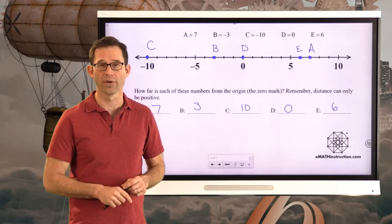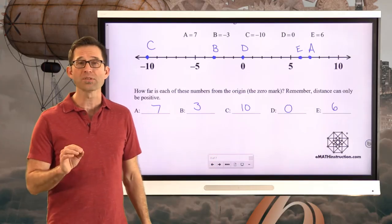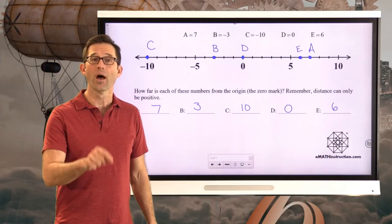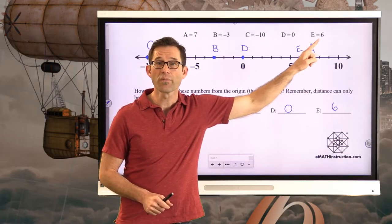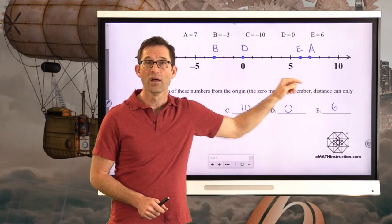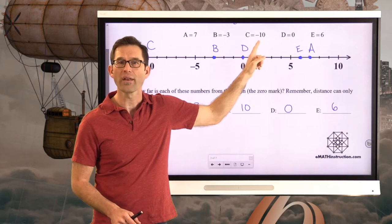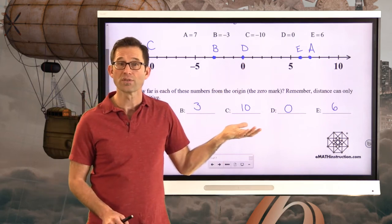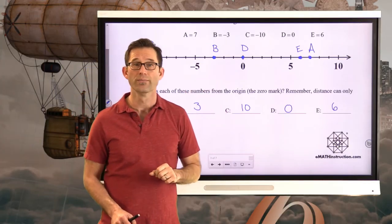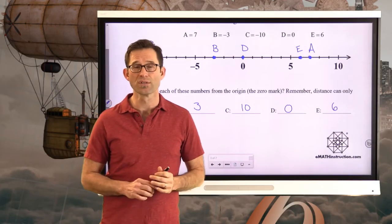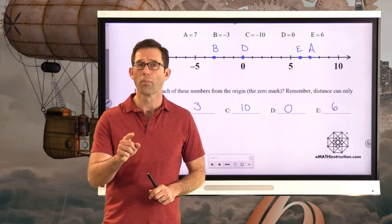What we have literally found here are the absolute values of each of these numbers. That's all absolute value is — it's the distance that a number is from the origin. Point E is six units from the origin and plotted at six. Letter A is seven units from the origin and plotted at seven. C is plotted at negative ten, which puts it ten units from the origin. B plotted at negative three is three units from the origin. Absolute value is simply how far from zero the number is plotted on the number line.